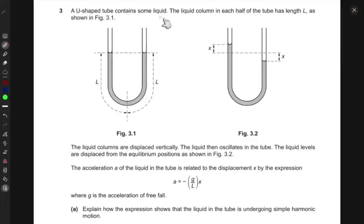A U-shaped tube contains some liquid. The liquid column in each half of the tube has length L, as shown in the figure. We can see that in each half, the length of the liquid inside it is L.